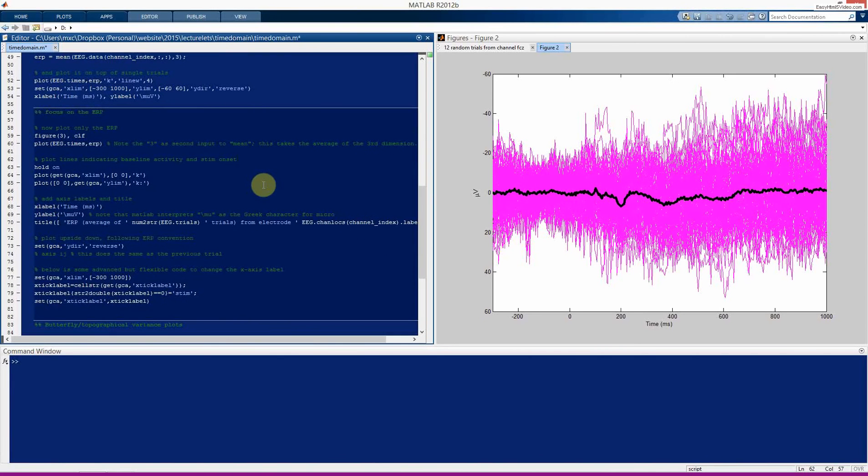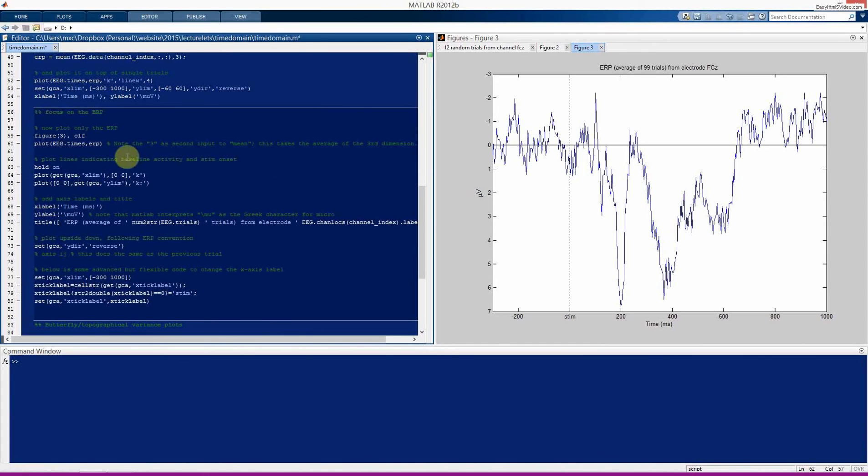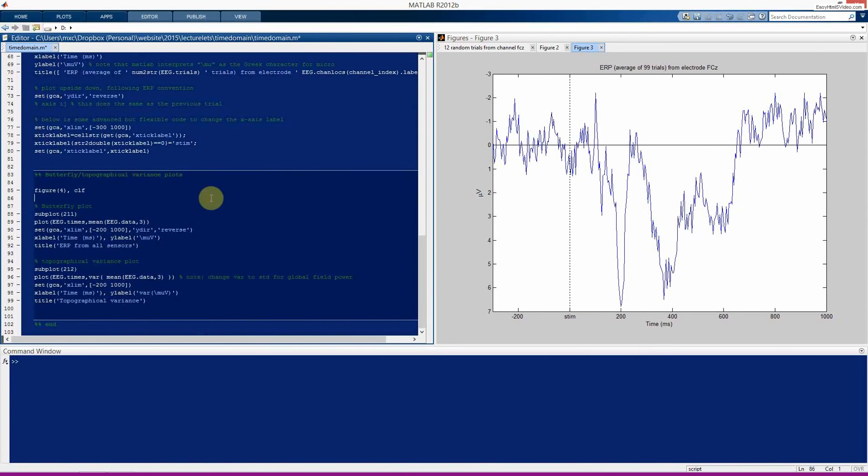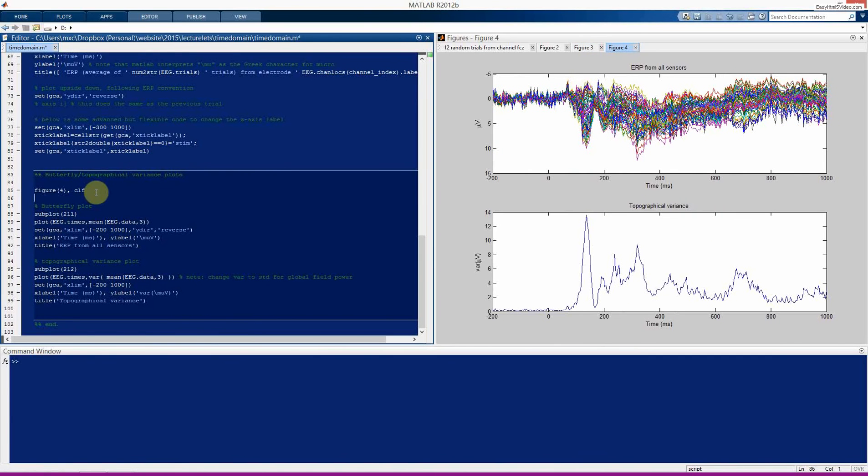So the next figure is nothing really that interesting. We are plotting the ERP again, this time without all the single trials. I have this code here, mainly in case you were interested in how to do some more slightly advanced plotting things like adding these lines and changing this from zero to stim, and so on. And now here, we are going to create the butterfly plot and the topographical variance plot, you can see this just reproduces the figure I had in the PowerPoint.